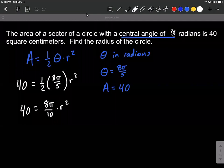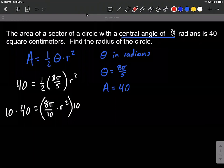I don't like fractions, so I'm going to multiply both sides by 10 to counteract that dividing by 10. So multiplying by 10, dividing by 10, we'll basically get to cancel out, and then we have what? 10 times 40 is 400, and then we have 8π times r squared.